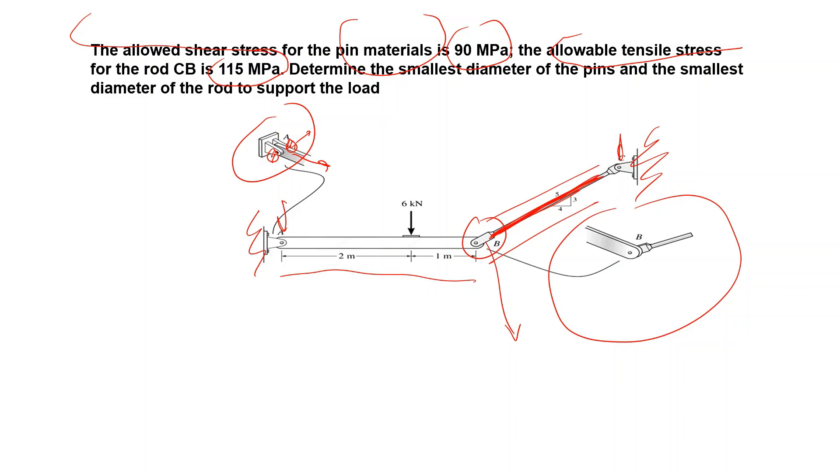The question is: determine the smallest diameters of the pins here and here and the diameter of the rod CB so that the load is supported within the given allowed shear and tensile stress levels.